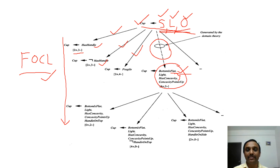So, if you consider FOIL, the general-to-specific tree is constructed using only training data. In FOCL, we construct it using both training data and domain theory. Thank you.